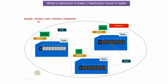In Scenario 3, there are three brokers, one topic, one partition, and the replication factor is 3. Since the replication factor is 3, Partition 0 will be available in Broker 1, Broker 2, and Broker 3. Partition 0 of Broker 1 is called the leader, and Partition 0 of Broker 2 and Broker 3 are called followers. All read and write operations will happen on the leader partition, which is Partition 0 of Broker 1, and the follower partitions will replicate all messages from the leader partition.